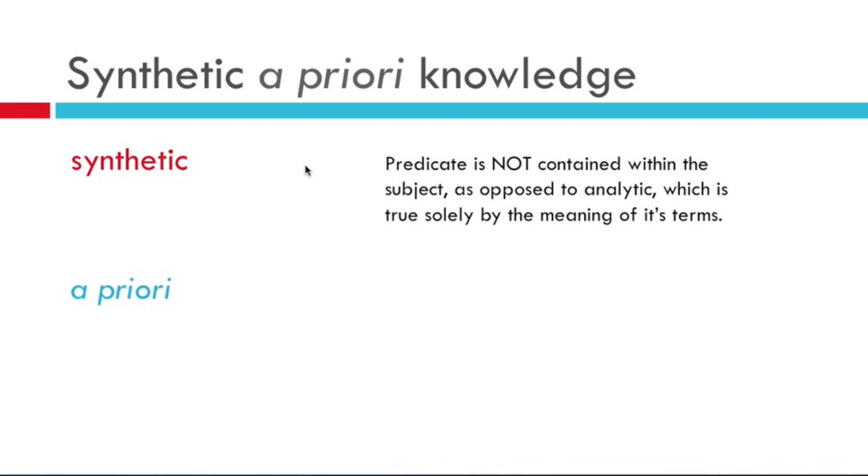An analytic truth would be something that is true solely because of the meaning of its terms. So for example, a triangle has three sides. A triangle, by definition, has three sides. So that would be analytic knowledge, true because of its definition.